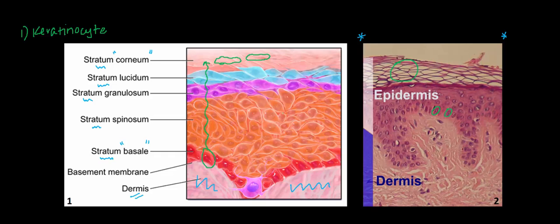The second cell type that we're interested in is the pigment producing cell called the melanocyte. Melanocytes are typically located at the dermal-epidermal junction, which is just a fancy way for saying in between the dermis and the epidermis.